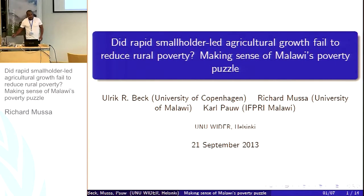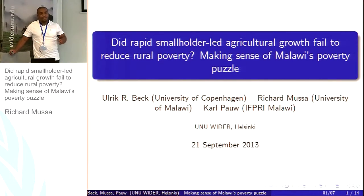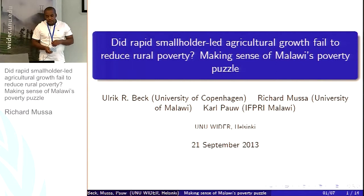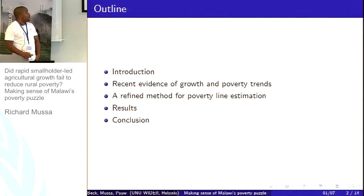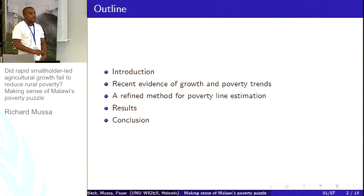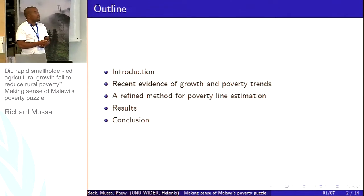Good afternoon. The good thing about this paper is all the co-authors are here, so if there are more questions, I'll always be rescued by the co-authors. This is my outline: I'll talk about the background to this paper, then the trends in poverty and growth in Malawi, and given those trends, you will see there's a need for a reassessment of poverty. I'll talk about the new methodology, discuss the results, and then conclude.